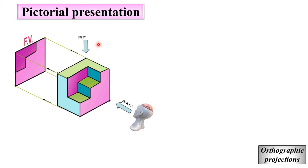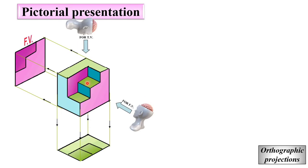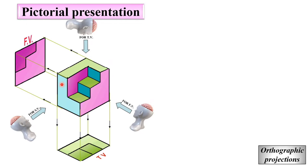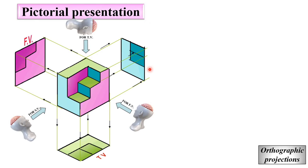For the top view, you have to see from the top direction. From the top direction, you can see this plane, this plane, and this plane — represented by green color. Next, from this side, that is called as the side view. You can see this L-shaped plane, this plane, and this plane — represented by blue color. So, this is the side view.